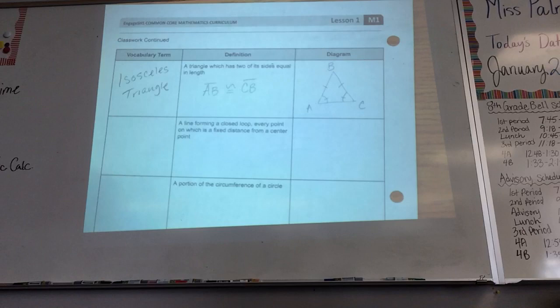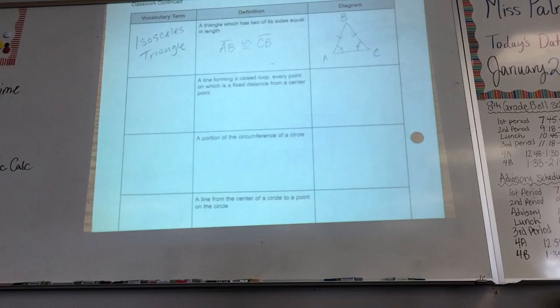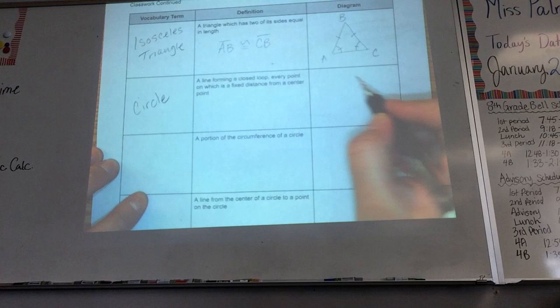Okay, so that's part of an isosceles triangle. All right, what's a line forming a closed loop, every point on which is a fixed distance from a center point? That's a fancy word for what? A circle. Wow, good job. Okay, and what's that look like? A circle with the center.